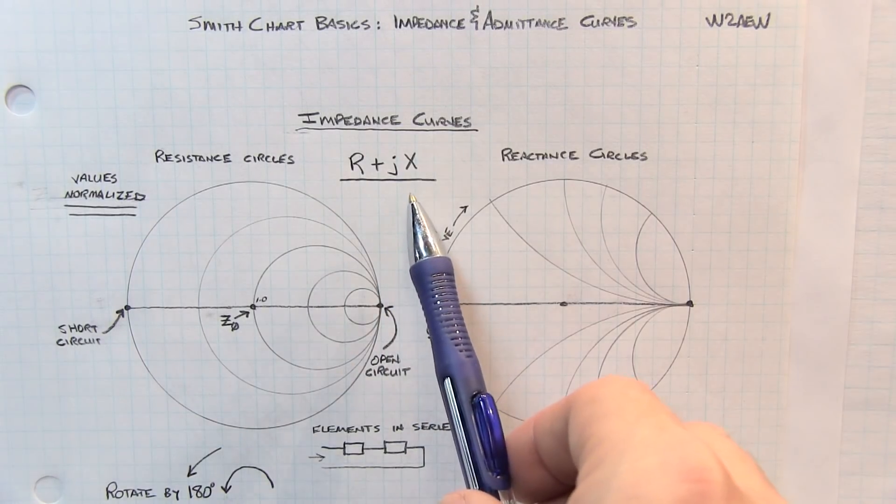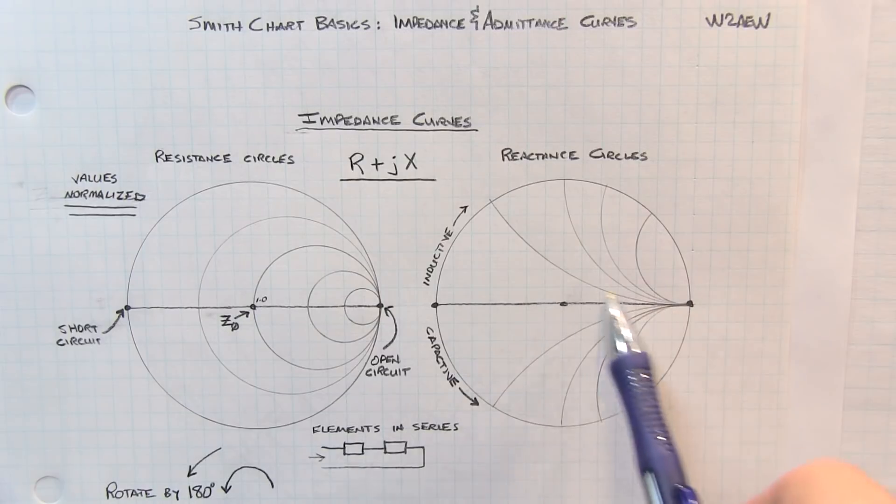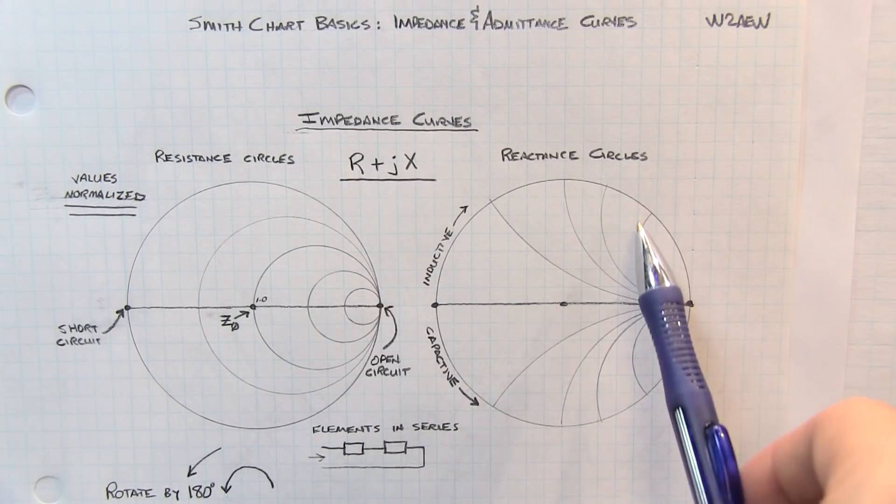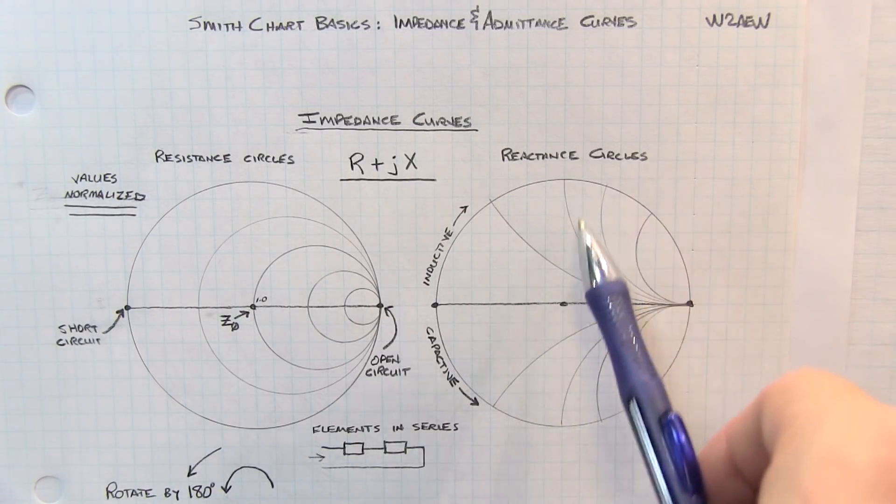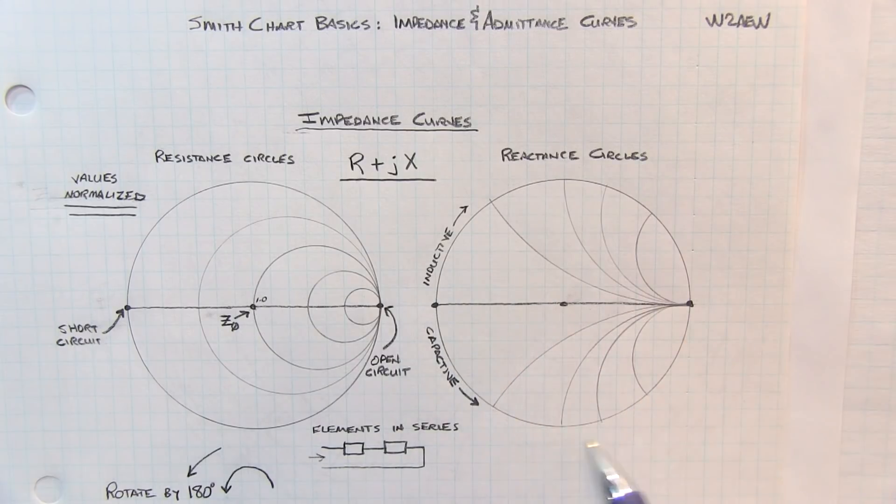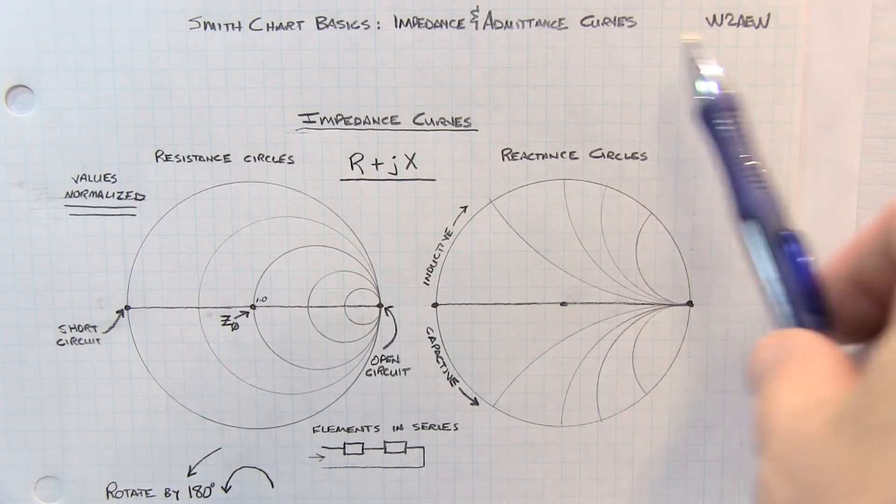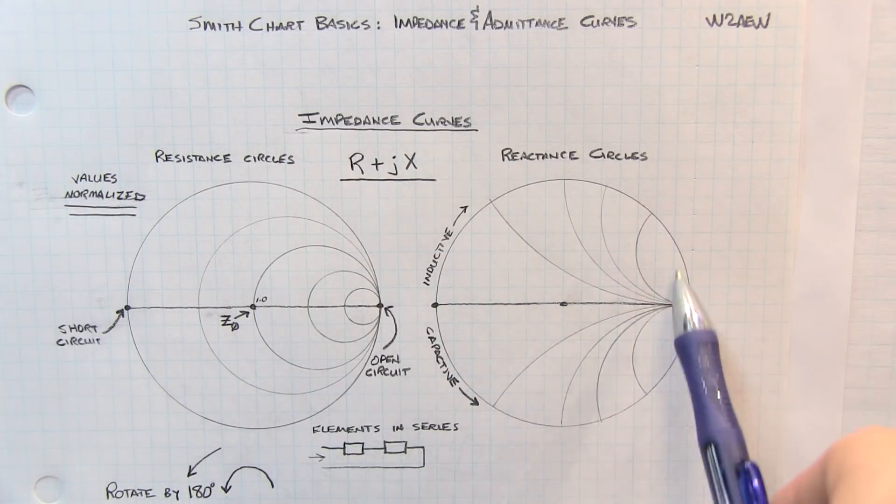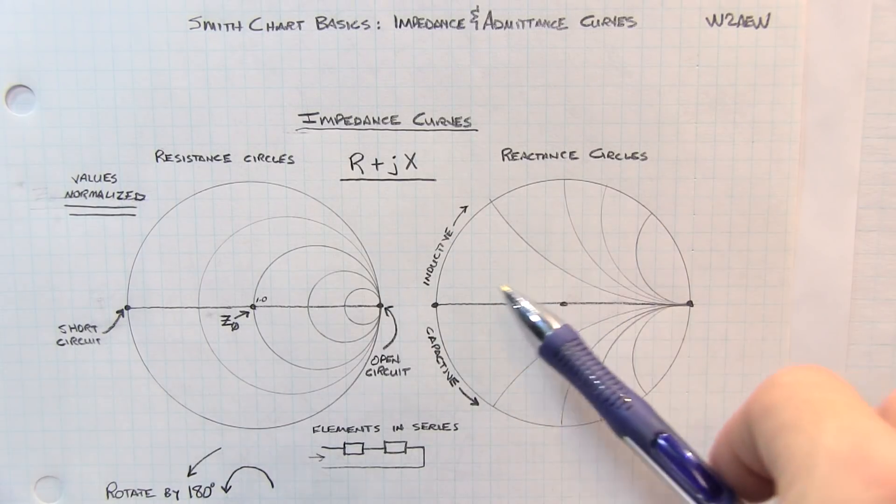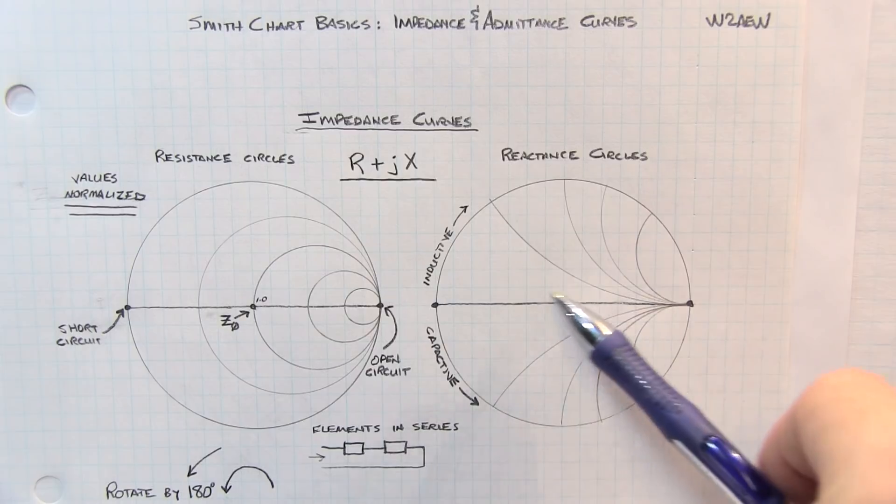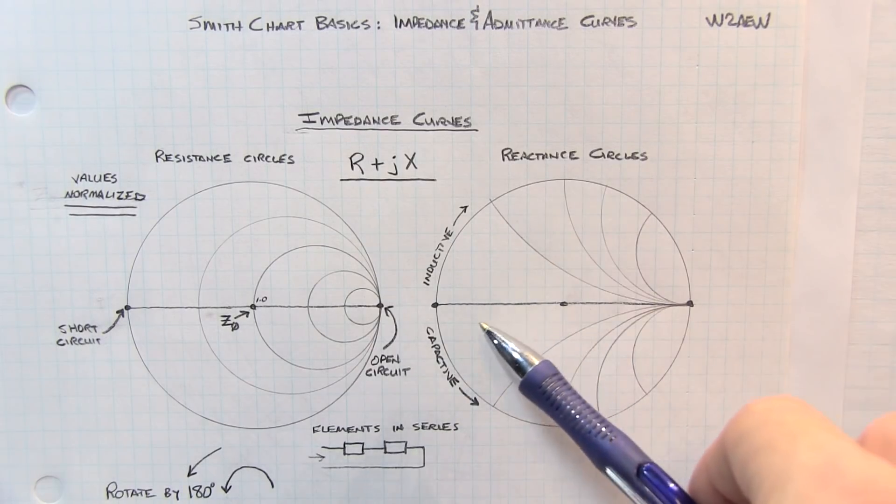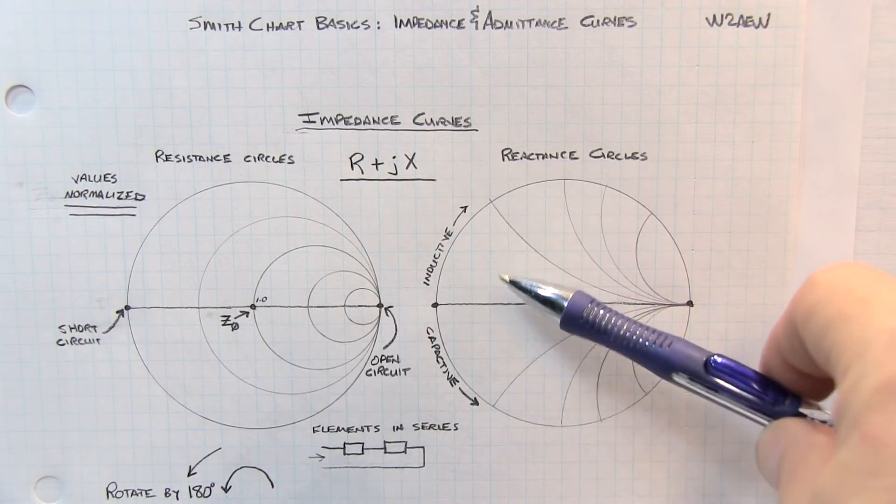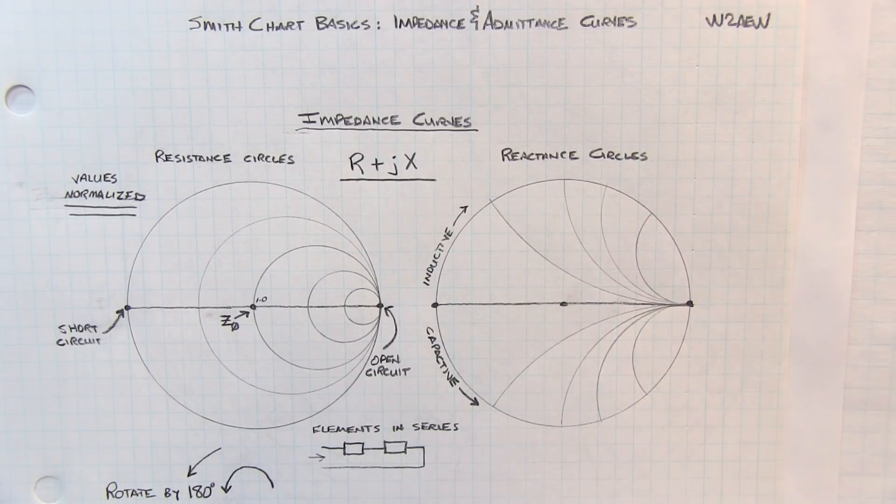The reactive component of a complex impedance is represented by this set of curves. This is actually a series of circles, but we're only showing the portion that lie inside of the Smith chart. The reality is it is a series of circles that expand around and beyond this outer perimeter. Inductive reactance is represented by curves above the baseline, and capacitive reactance is represented by the curves below the baseline.